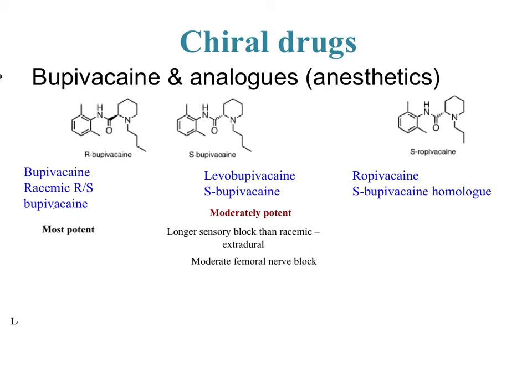The S alone is moderately potent and still works, and it actually has a longer sensory block than the racemic extradural — implying it stays in the enzyme longer since it doesn't fit quite right, blocking receptors or the enzyme for longer. It works as a moderate femoral nerve block. The homologue ropivacaine is less potent, has less motor block than the racemic, and still works as a moderate femoral nerve block, but is not as potent as the S bupivacaine.